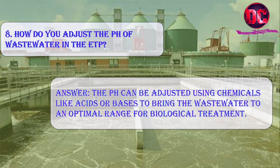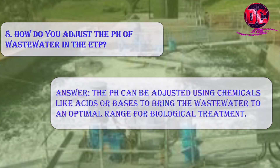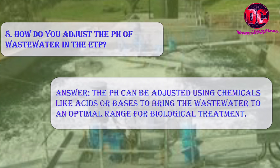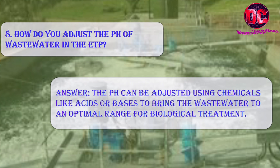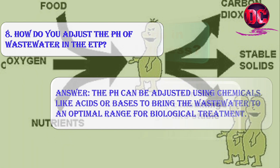8. How do you adjust the pH of wastewater in the ETP? Answer: The pH can be adjusted using chemicals like acids or bases to bring the wastewater to an optimal range for biological treatment.